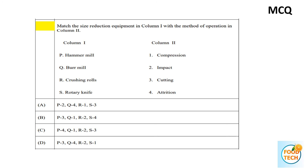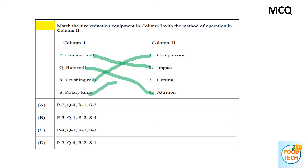Match the size reduction equipment in Column 1 with method of operation in Column 2: Hammer mill — impact; Burr mill — attrition/friction; Crushing rolls — compression; Rotary knife — cutting. Answer A is correct.